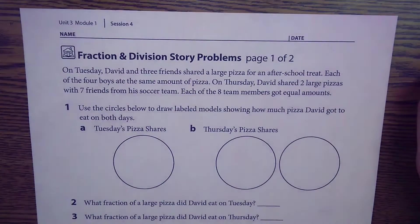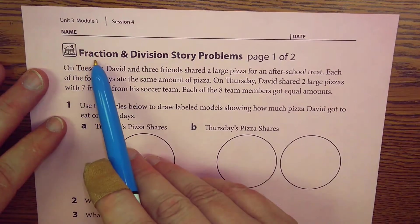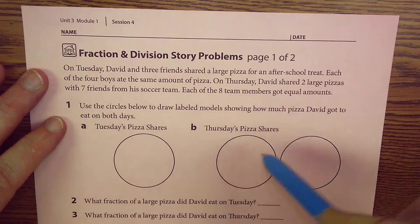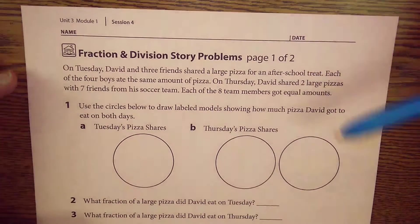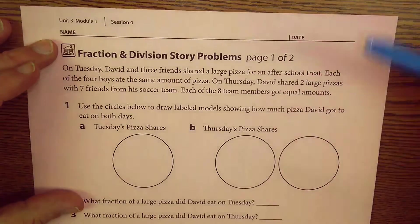All right, we are taking a look at Unit 3, Module 1, Session 4. The name of this home connection is Fraction and Division Story Problems. It's a two-pager. So we've got a pretty beefy story problem that's about pizza. Let's take a look.